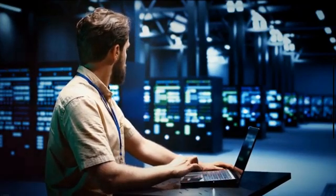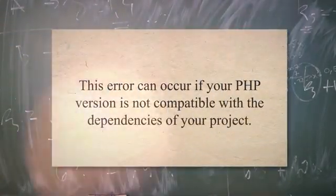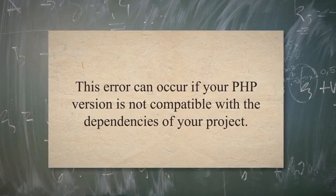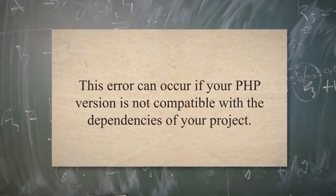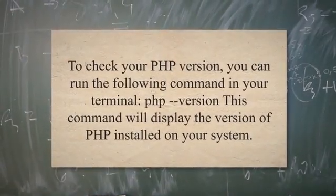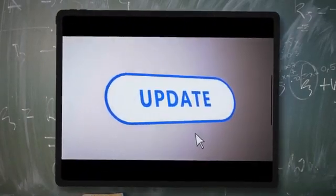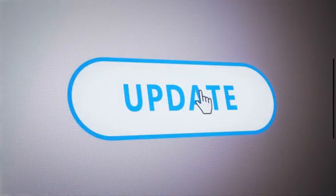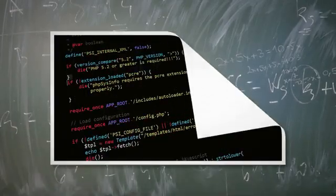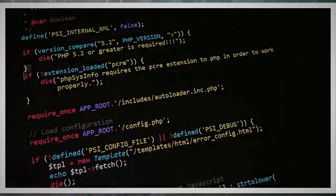To resolve this issue, it is important to check the PHP version you are using. This error can occur if your PHP version is not compatible with the dependencies of your project. Some packages may require specific PHP versions, and using an incompatible version can result in installation failures. To check your PHP version, you can run the following command in your terminal: `php --version`. Compare this version with the requirements of your project's dependencies. If the PHP version is lower than what is required, you will need to update your PHP installation.